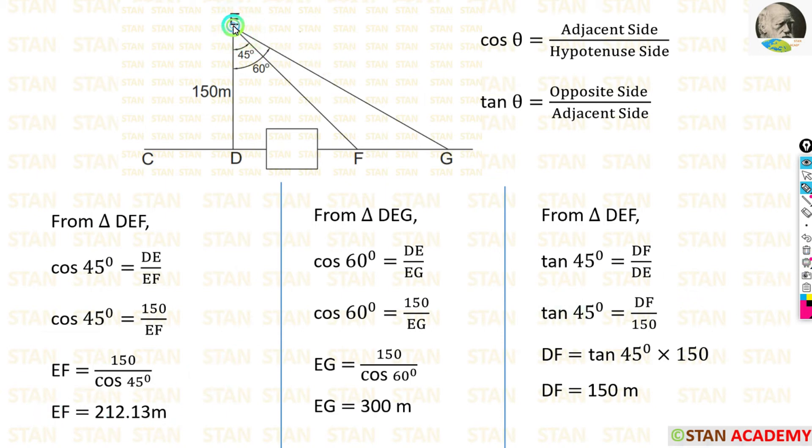Now I am going to find out the length of EG. For that I am going to take the triangle DEG. In this triangle, adjacent side is DE and the hypotenuse side is EG. So cos 60° = DE/EG. The length of DE we already know, 150 meters, we can apply. Finally we are getting EG equals 300 meters.